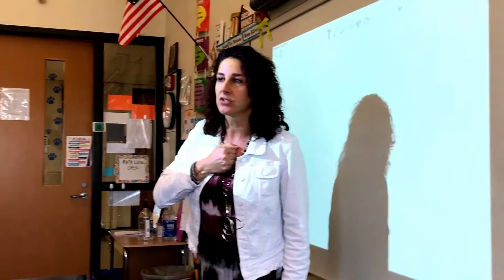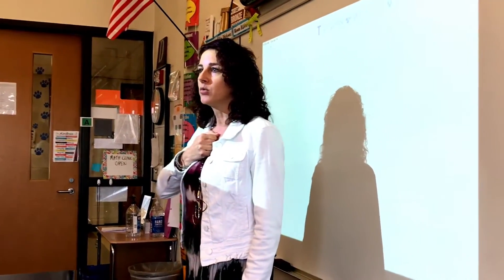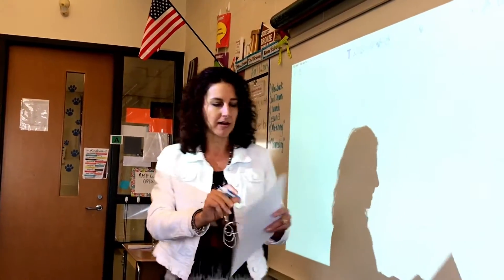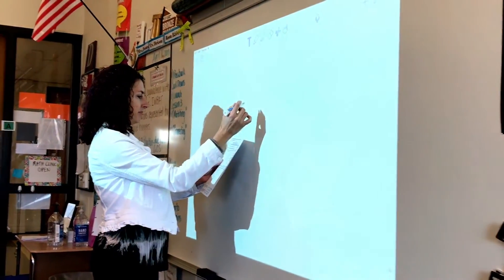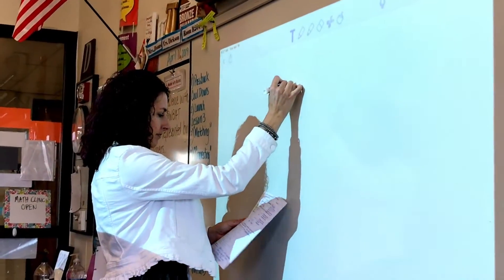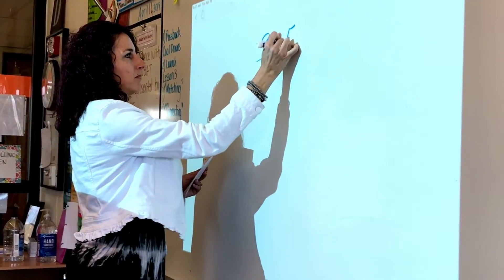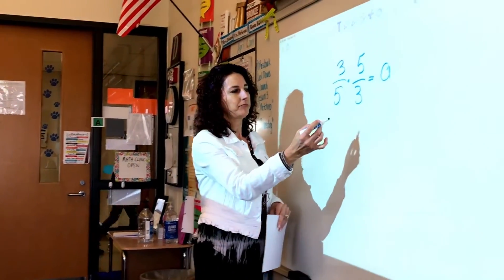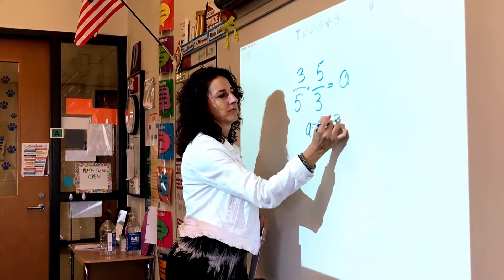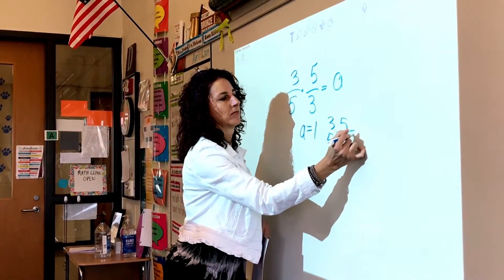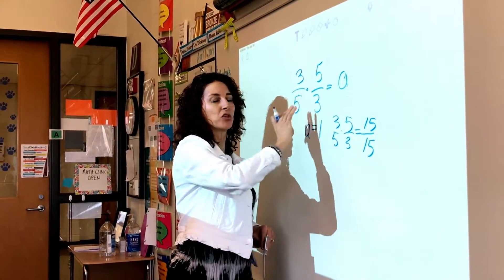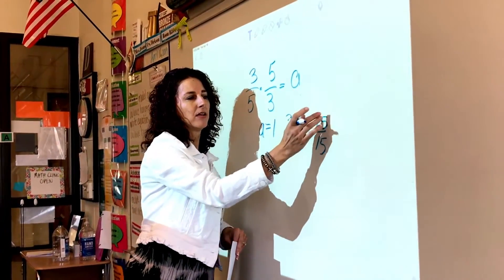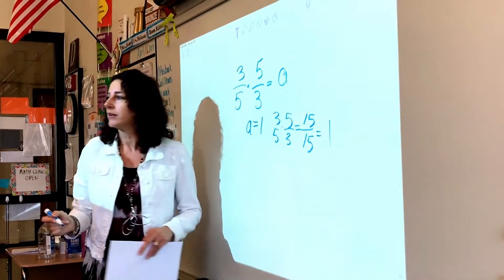Remember, for a number talk we're going to start with our fist to chest — that way your solution or strategy is private just for you and me to see. When you get one solution or strategy, just put a finger out so I know who to call on. Emma: I got one because three times five is 15 and five times three is 15, and the same number over the same number equals one. Okay, and anytime you multiply straight across, that's what we know about the numerator and denominator — you'll get 15 fifteenths. When you have the same numerator and denominator, we get one. Excellent.